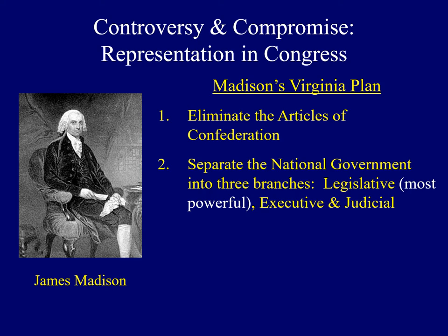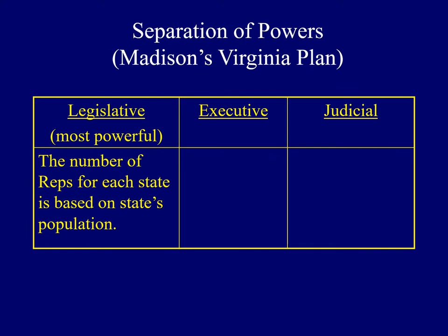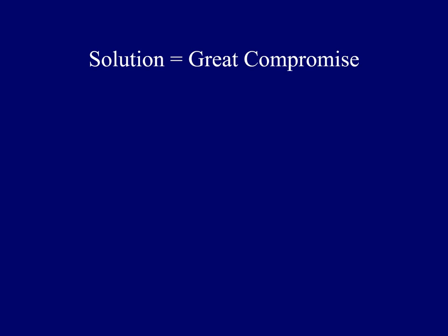While those first two proposals met with approval, Madison's third main idea was very controversial. He argued that representation in the legislative branch should be determined entirely by each state's population. The big states thought this was a good idea, but individuals from small states disagreed wholeheartedly — they would lose a lot of power under this new system. The success of the convention was threatened by the issue of how each state would be represented.